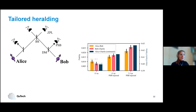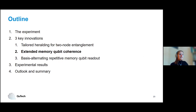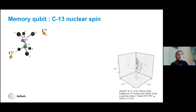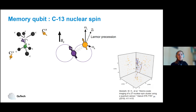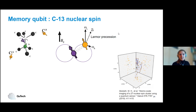Now for the second improvement: extended memory qubit coherence. We use the electron spin of the NV center as our communication qubit, but we can use nearby carbon-13 isotopes as memory qubits. We cannot control those directly — the only way to control them is via the electron spin. By changing the spin state of the communication qubit, we change the Larmor precession frequency of the memory qubits, and by doing this in a tailored, time-precise method, we can control these memory qubits.